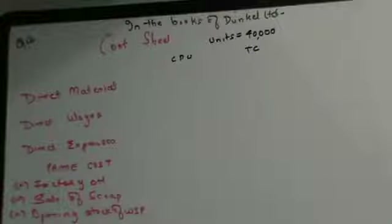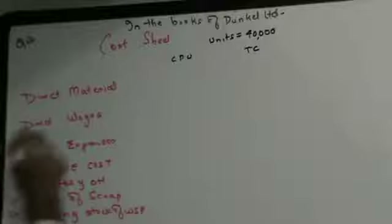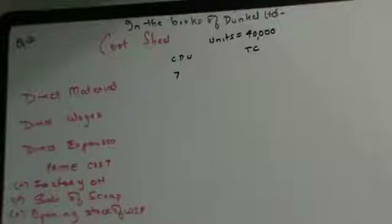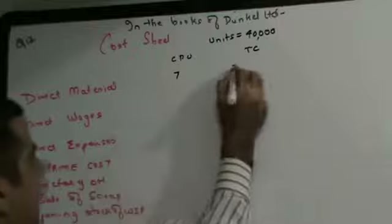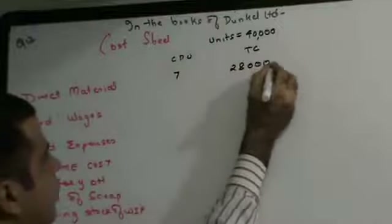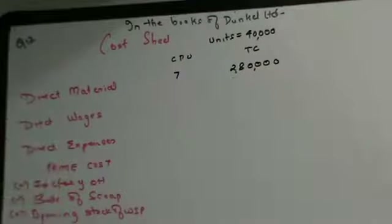Raw material cost per unit is 7. Cost per unit multiplied by units gives total cost: 7 into 40,000 equals 2,80,000.